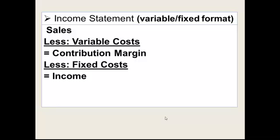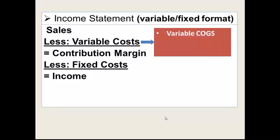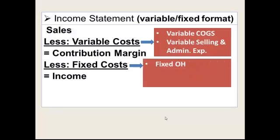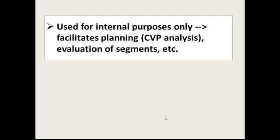The income statement format under variable costing is the contribution margin format, which emphasizes variable versus fixed costs. Sales minus variable costs gives you contribution margin; minus fixed costs gives you net operating income. Variable costs include variable cost of goods sold and variable selling and administrative expense. Fixed costs include fixed overhead and fixed selling and administrative expenses. Variable costs go above the contribution margin and fixed costs go below, whether they're product or period costs. This method is used for internal purposes and facilitates planning, CVP analysis, segment evaluation, and other decisions.